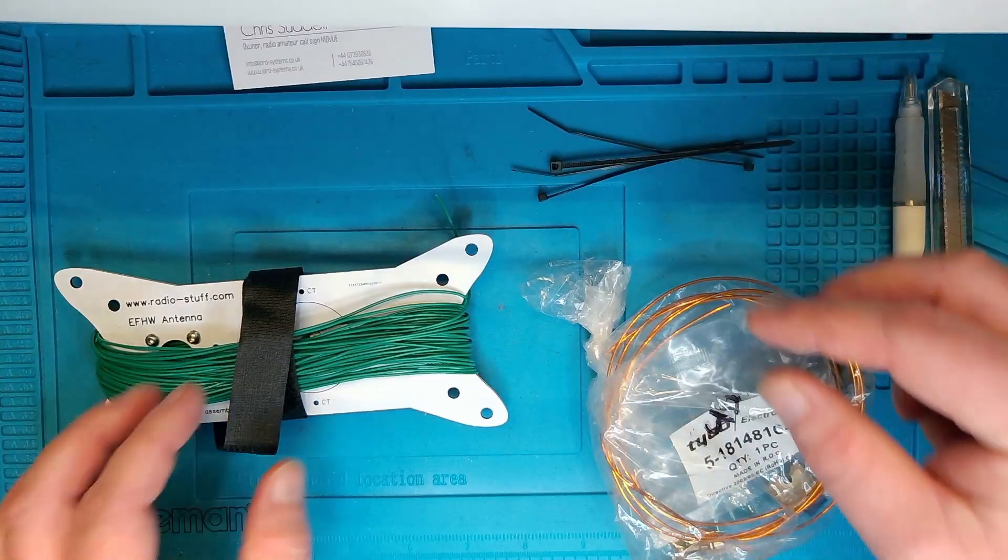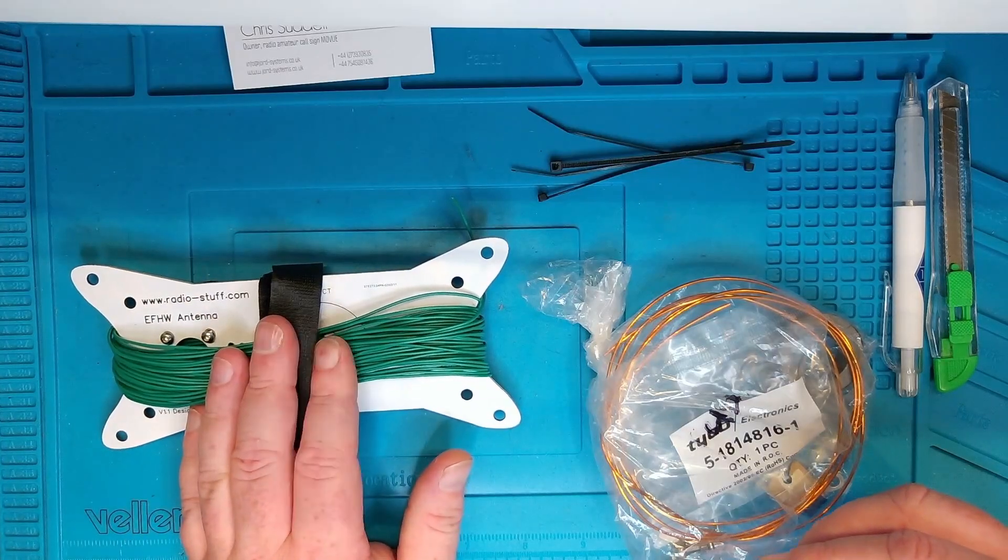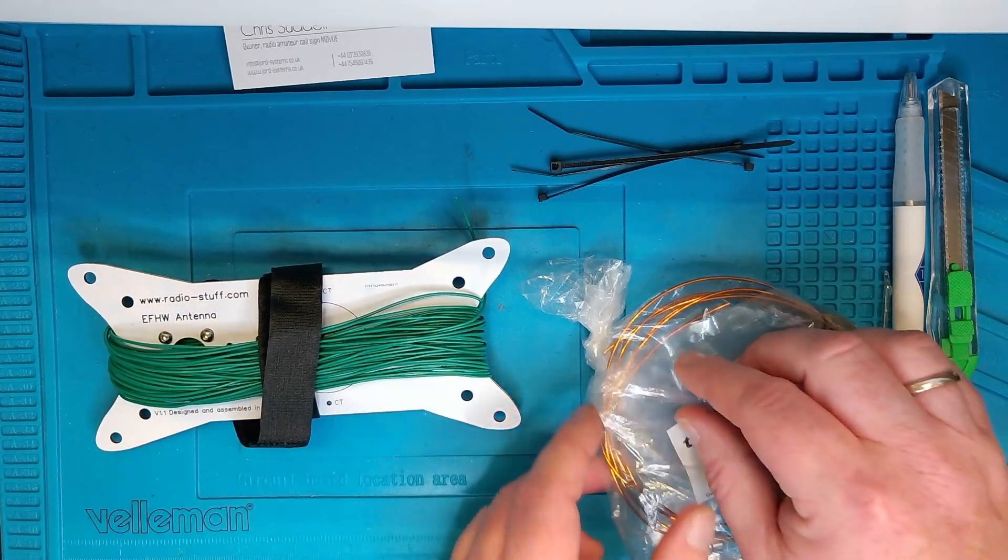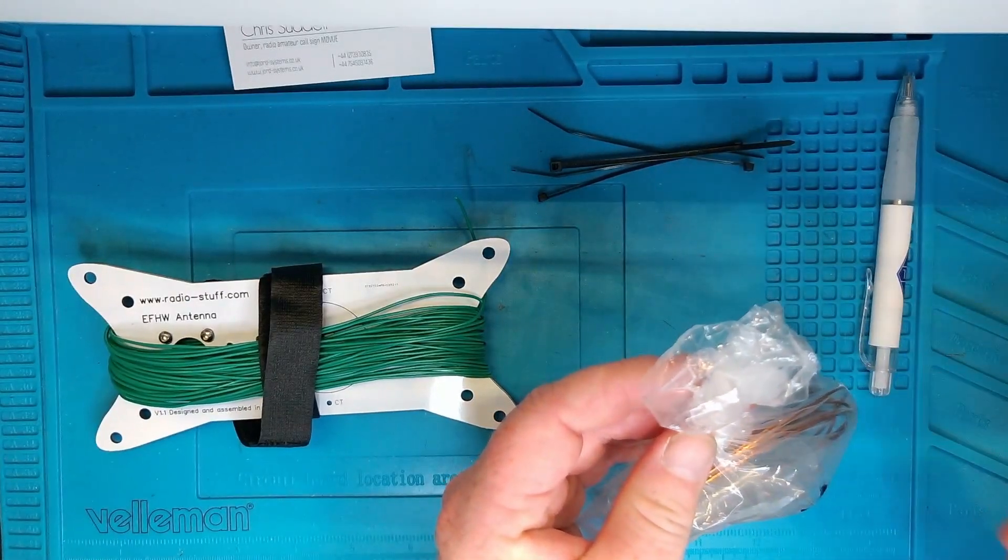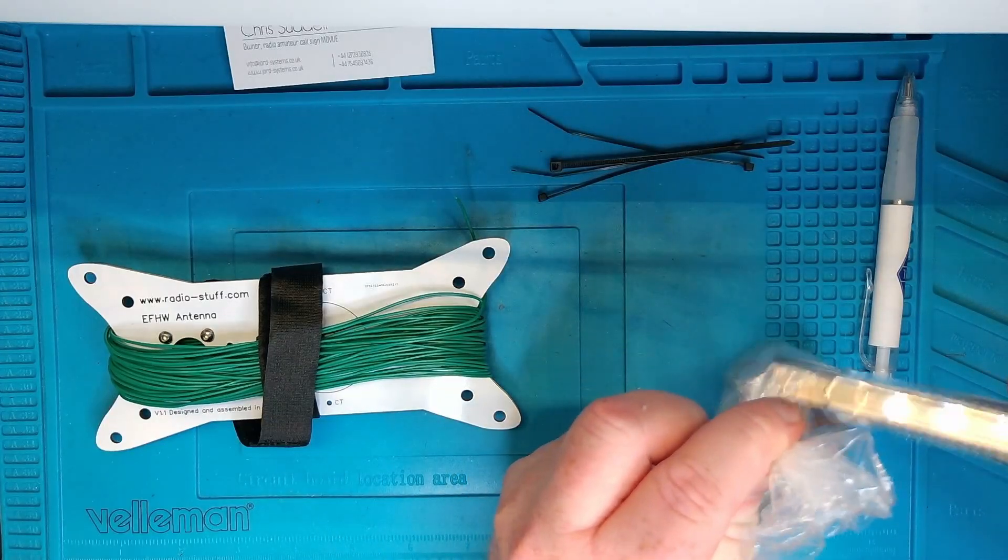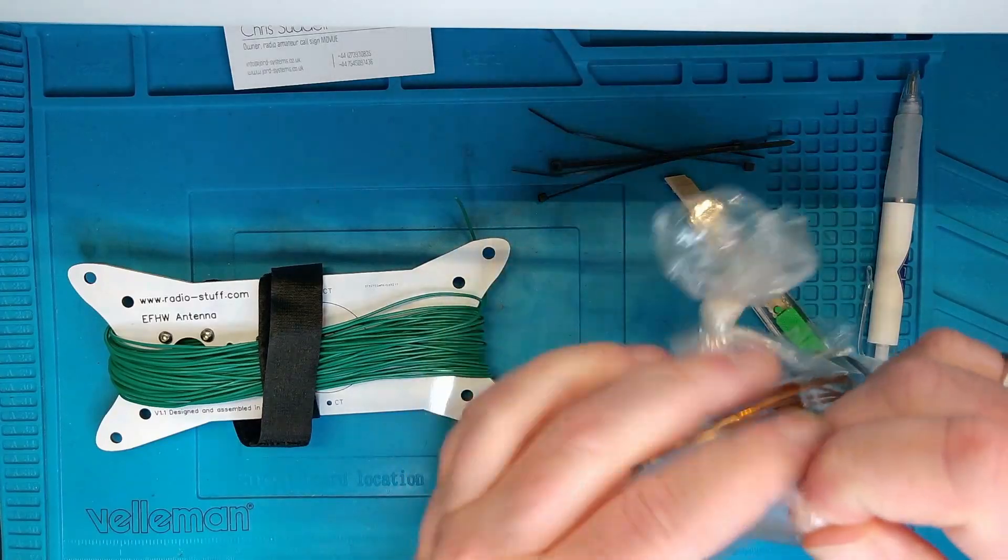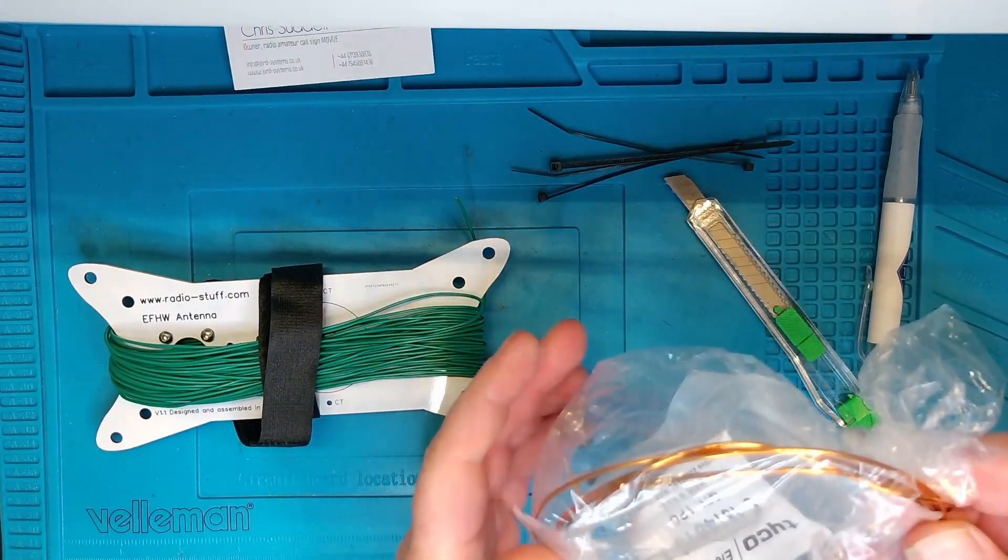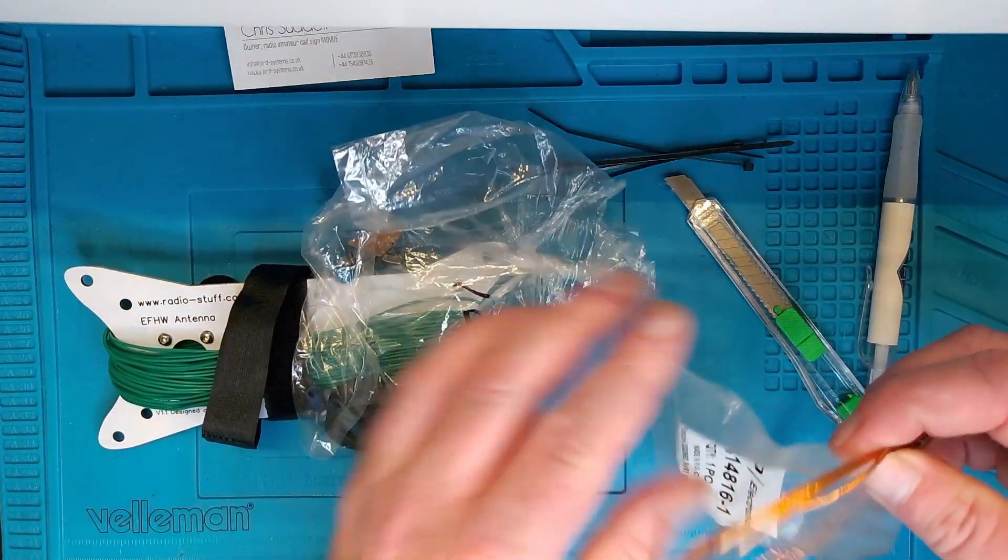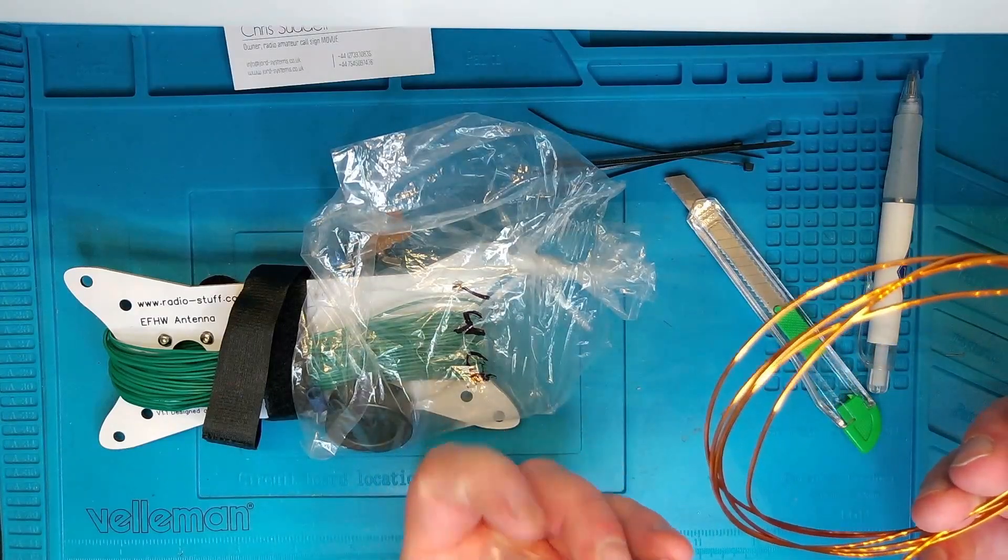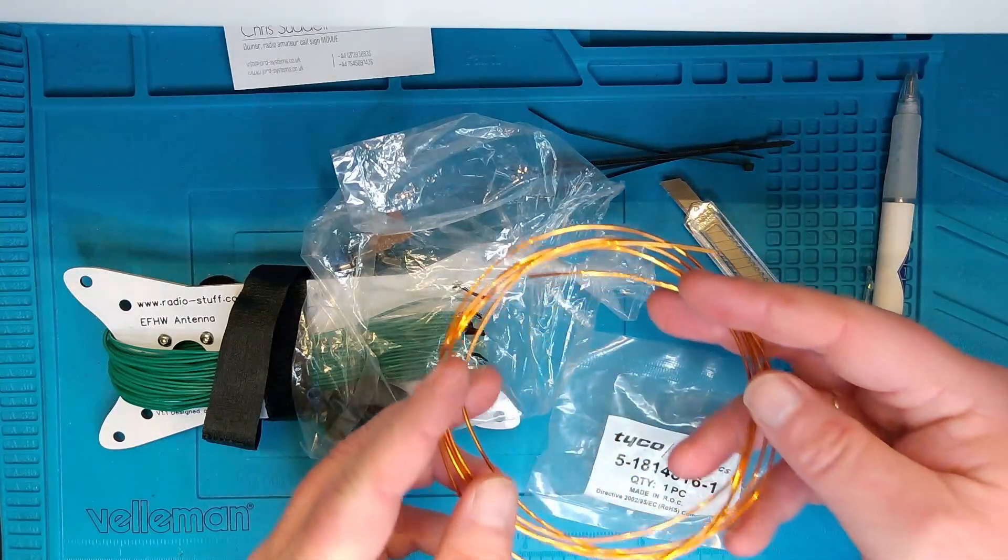You get some contact information in case you are wondering about stuff with this antenna. You get four zip ties, the antenna winder, which is a little bit special. And I get a bag of parts. So let's open the bag of parts and see what's inside here.